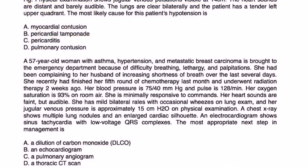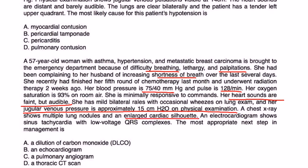Next question: a 57-year-old woman with asthma, hypertension, and metastatic breast carcinoma is brought to the ED with difficulty breathing, lethargy, and palpitations. She recently completed chemotherapy and radiation. Blood pressure is 75 over 40, pulse is 128, oxygen saturation is 93% on room air. Heart sounds are faint but audible. Jugular venous pressure is approximately 15. Chest X-ray shows multiple lung nodules and an enlarged cardiac silhouette. ECG shows sinus tachycardia and low voltage QRS complexes. Most appropriate next step in management?